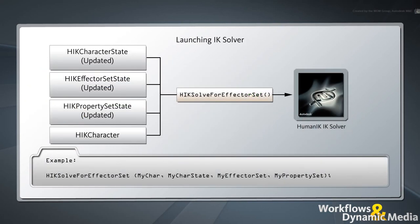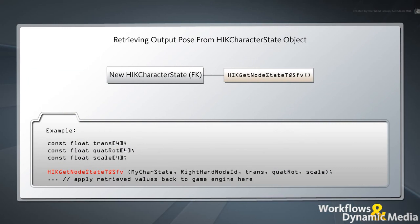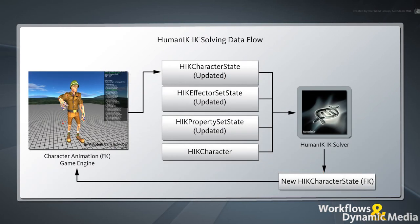It's finally time to launch the IK solver to generate your character's final pose. Call the HIKSolveForEffectorSet function with pointers to all of your updated objects as arguments. The IK solver produces a new pose and stores it in the HIKCharacterState object. From this point, you must retrieve this pose using the HIKGetNodeStateTQSFV function with the following arguments: a pointer to the HIKCharacterState object, the node ID of the node whose matrix you are retrieving, and three separate arrays of four floating point numbers to store the translation, quaternion rotation, and scale values of the current node. Depending on your own data structure, you can also use transform matrices or a dataset to retrieve this pose. All that remains is to send back the retrieved values for each node to the corresponding joint of the character in your game engine.